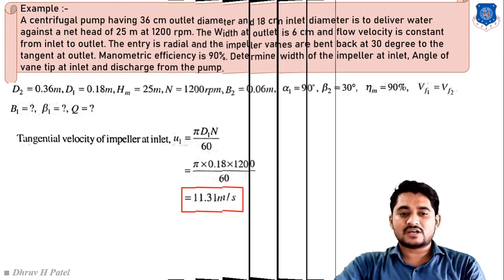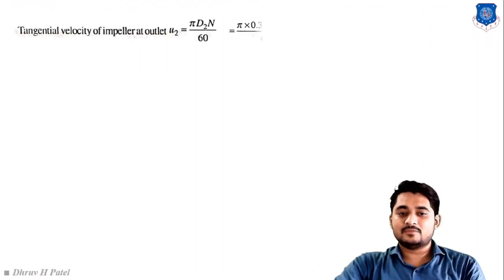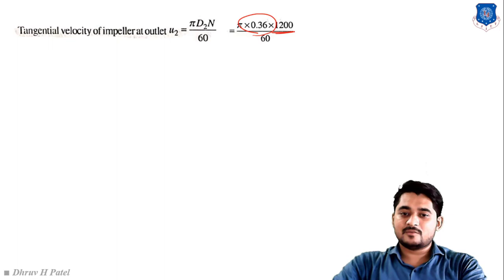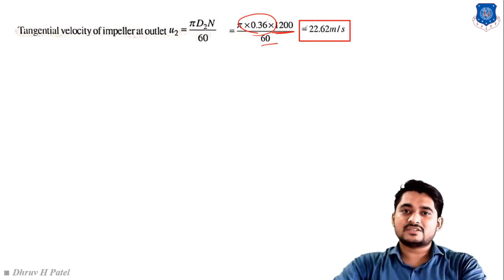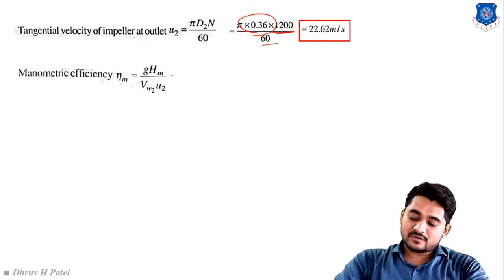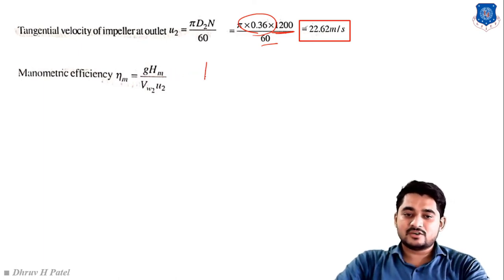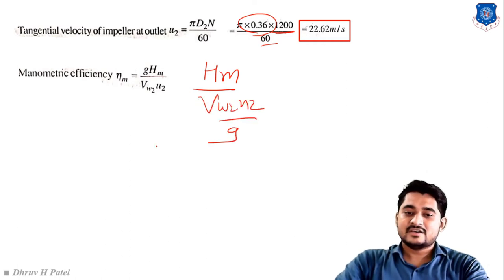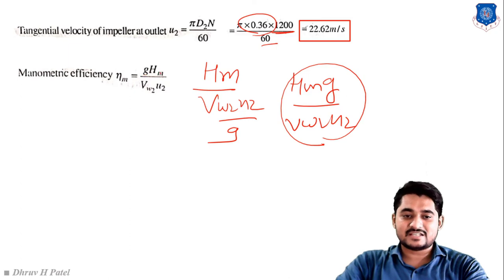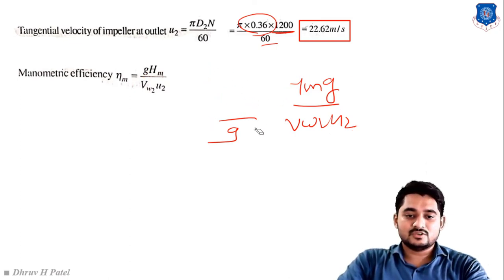Similarly for the outlet section, u2 = π d2 N / 60 = π × 0.36 × 1200 / 60 = 22.62 m/s. From the given manometric efficiency, η_m = H_m × g / (V_w2 × u2), so V_w2 = g × H_m / (η_m × u2).